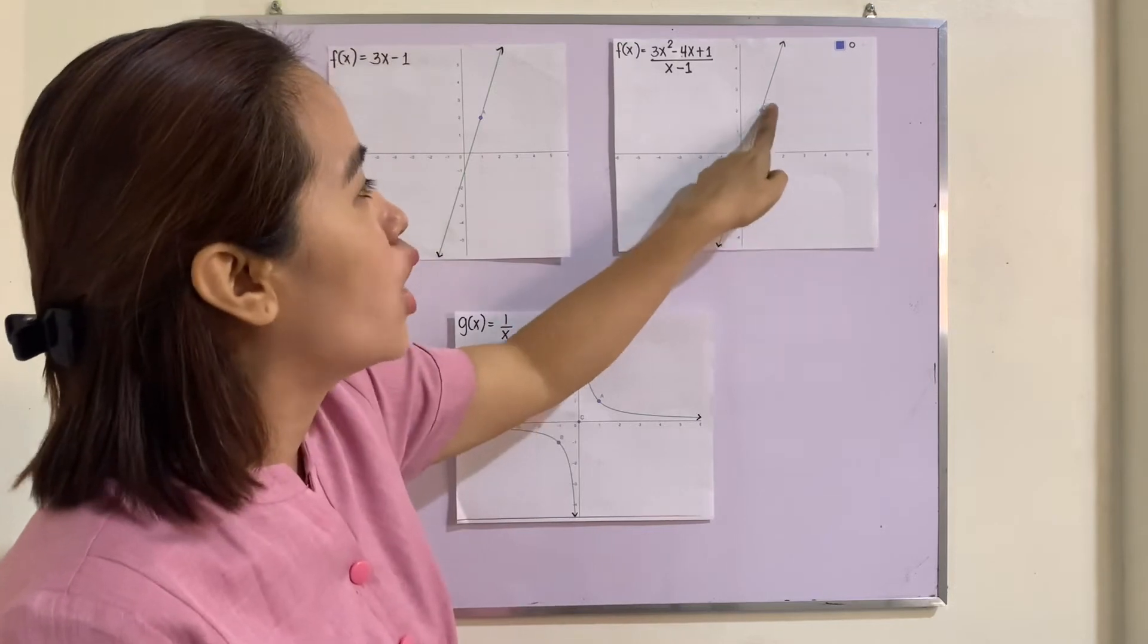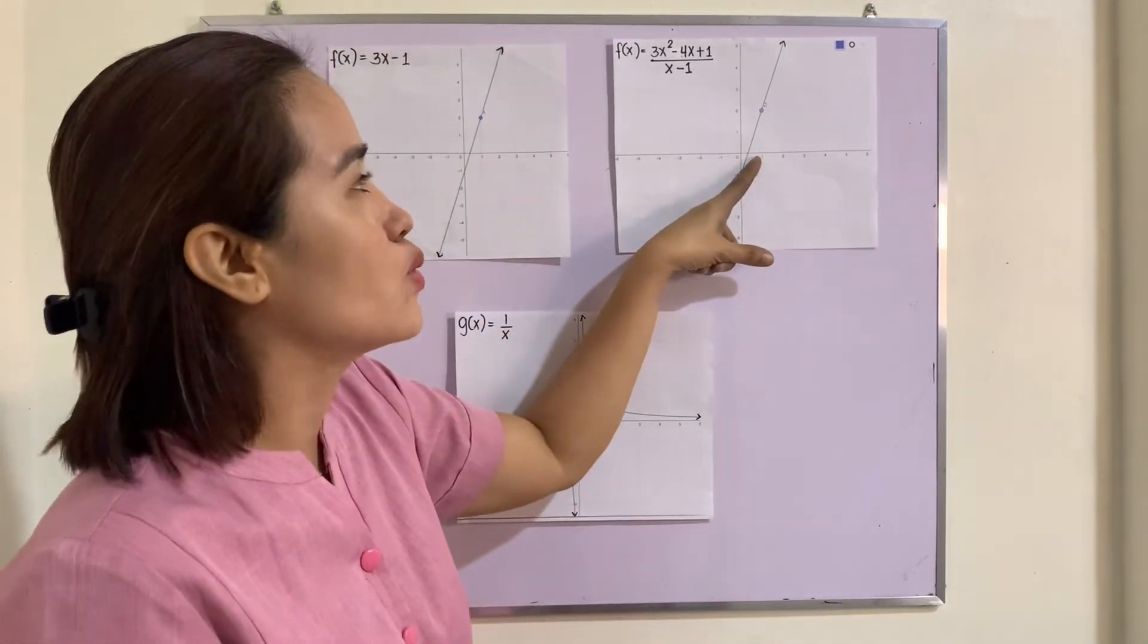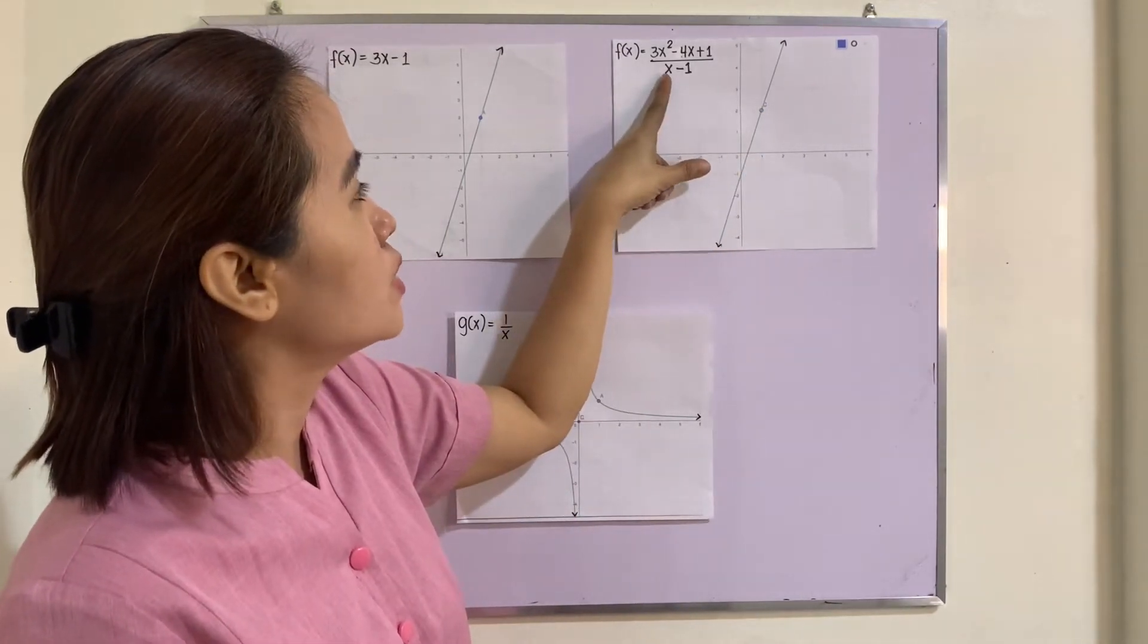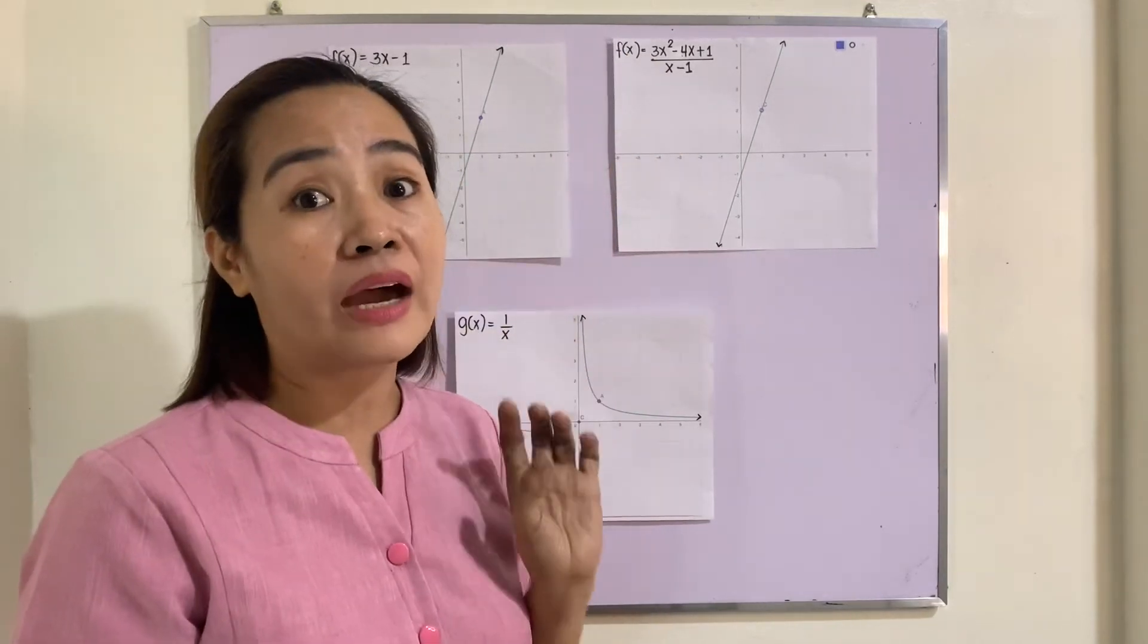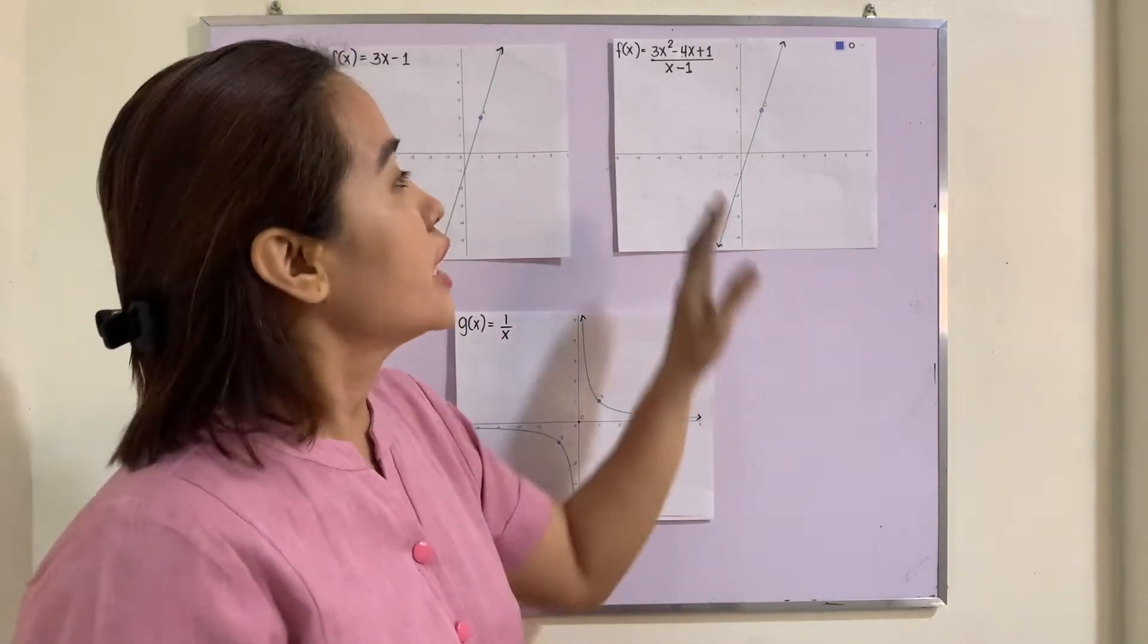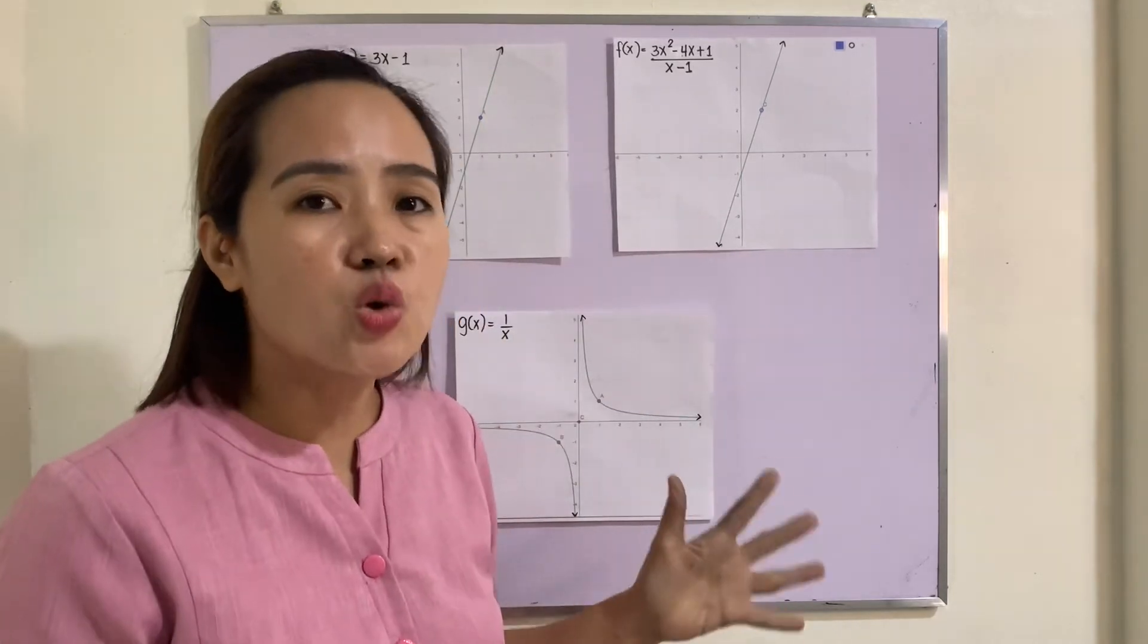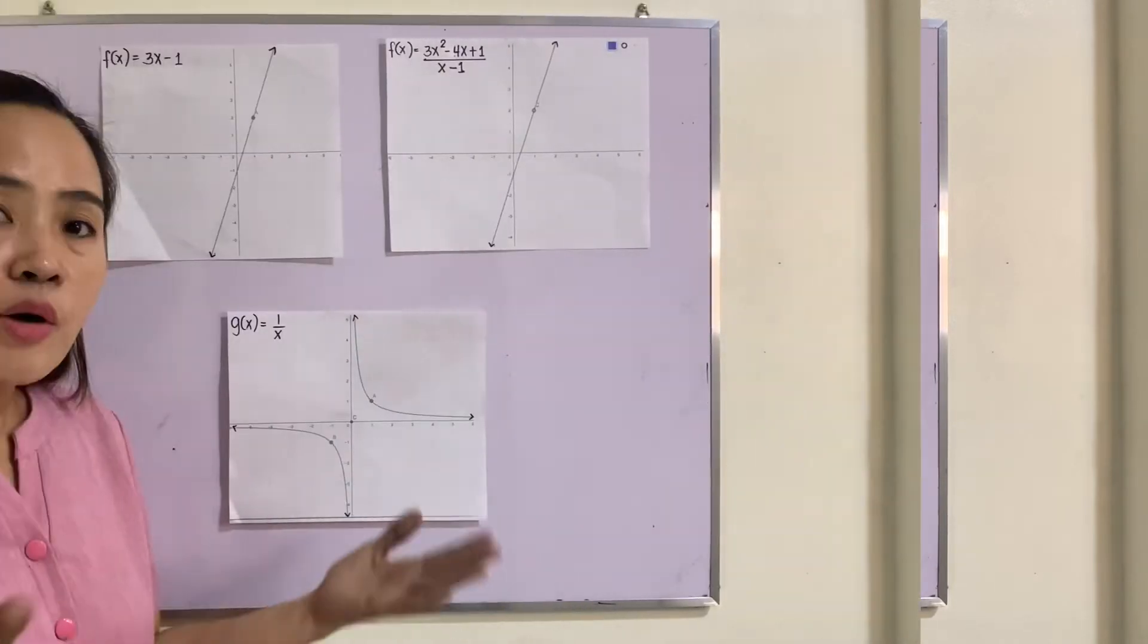And that hole is at x = 1. Why? Because if you will replace x = 1 here, the function will have an undefined value. So that cannot be graphed. We can say that this function is not continuous at x = 1.